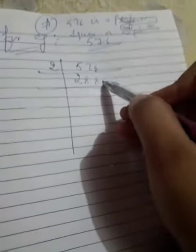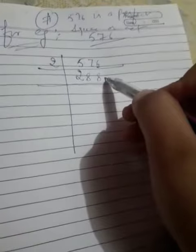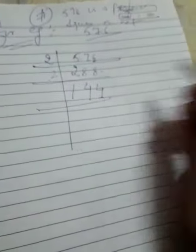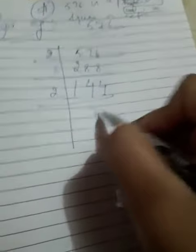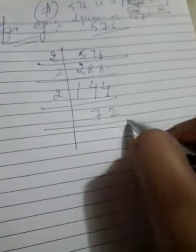Now 8 unit digit, again it is divisible by 2. Divide by 2. 2 times 1 is 2, 2 times 4 is 8. Now again unit digit is 4 which is divisible by 2. 2 times 7 is 14, 2 times 2 is 4.